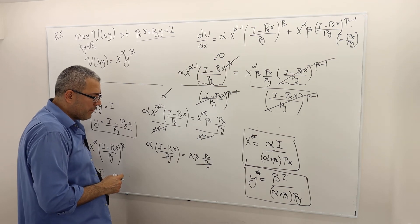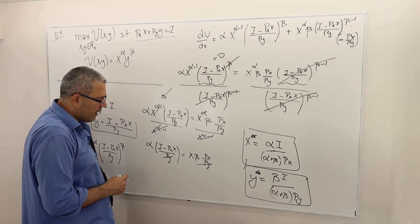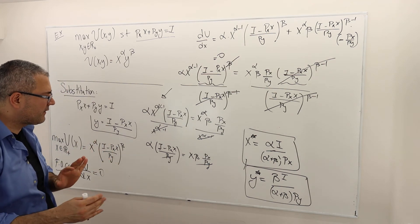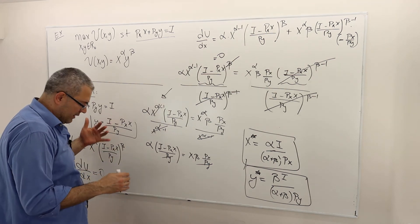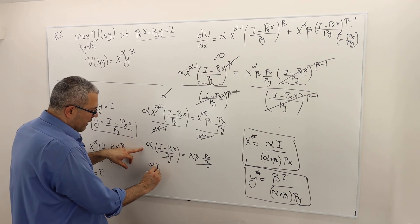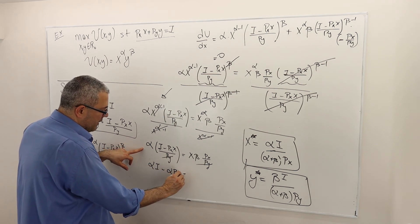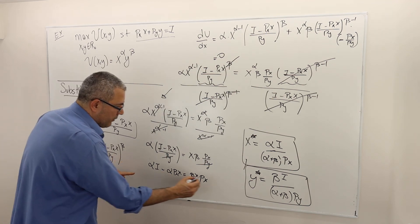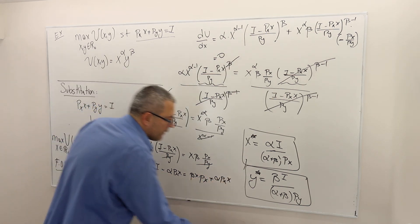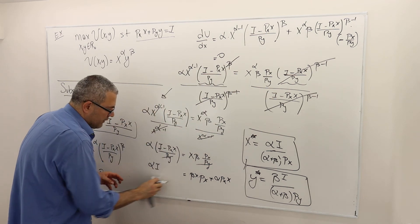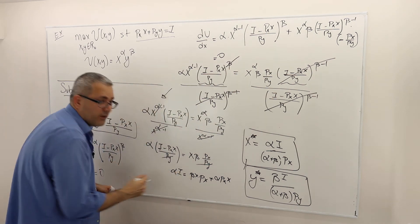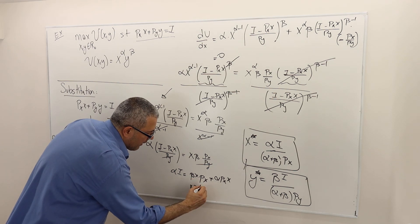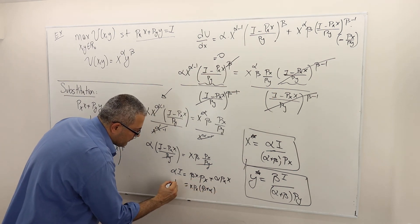What else? Remember, I want to keep, I want to collect my X on one side and all the other constants on the other. So here I have alpha income minus alpha PXX equals beta X PX. Very good. So send this term to the other side, alpha PXX. So this is it. This is alpha I because I don't have much space. So here, this is basically XPX parentheses beta plus alpha equals alpha income.